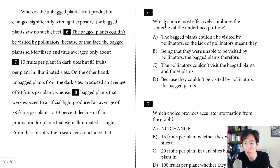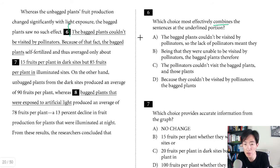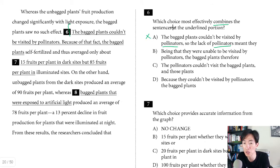Question six asks which choice most effectively combines the sentences. 'The bagged plants couldn't be visited by pollinators. Because of that fact, the bagged plants self-fertilized.' There's a clear cause-and-effect relationship: because they couldn't be visited by pollinators, they ended up self-fertilizing. Choice A repeats the word 'pollinators' twice, which stylistically the SAT doesn't prefer. Choice C also repeats the word 'plants.' Both B and D are similar — B says 'being that they were unable to be visited by pollinators, the bagged plants, therefore.' Compare that to D: 'because they couldn't be visited by pollinators, the bagged plants.'